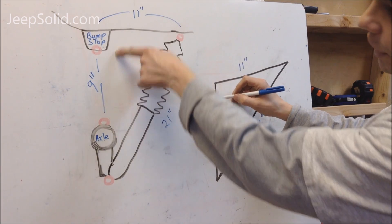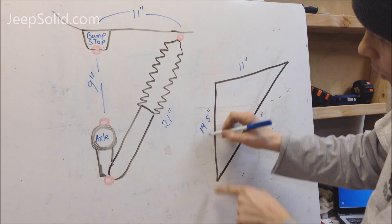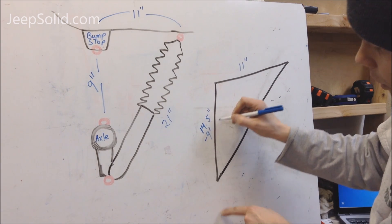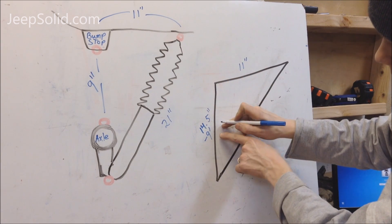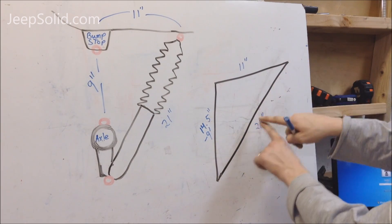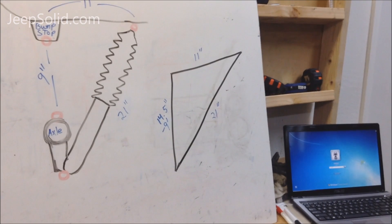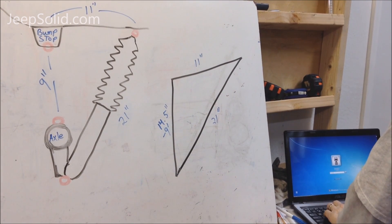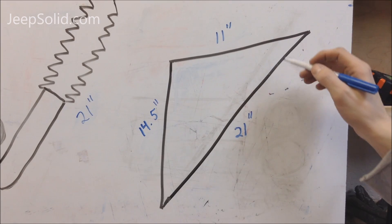If our axle travels up and hits our bump stop, we're going to shorten this length by 9 inches. When we shorten this length by 9 inches, we need to know what the length is of the shock. That is where we get on Google and use our laptop here and pull up a calculator for us.